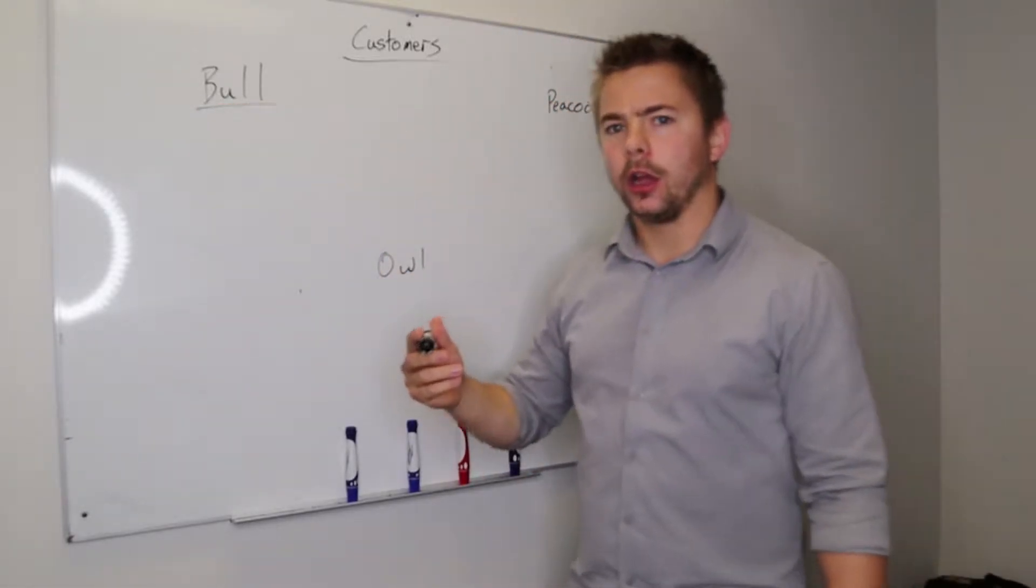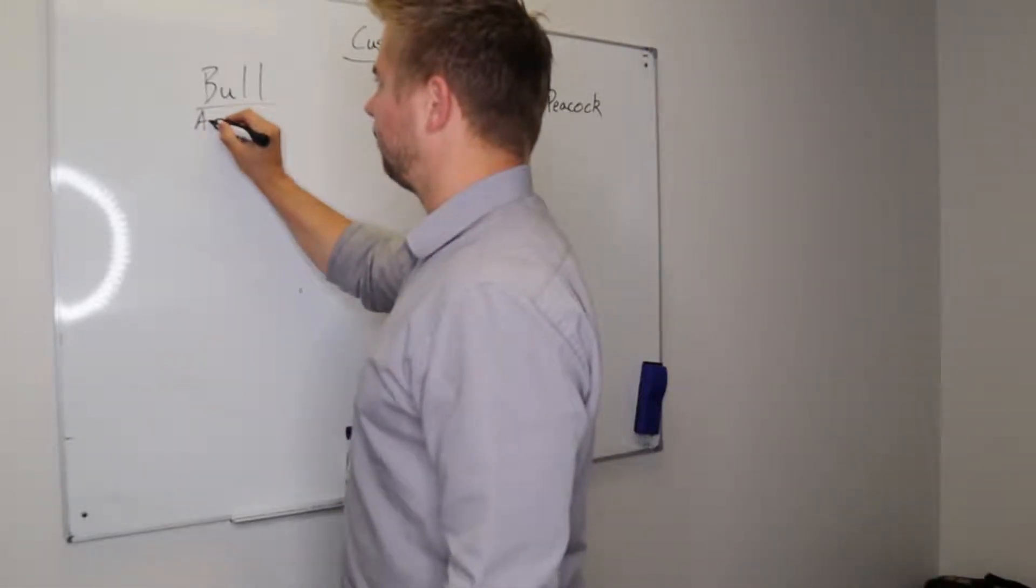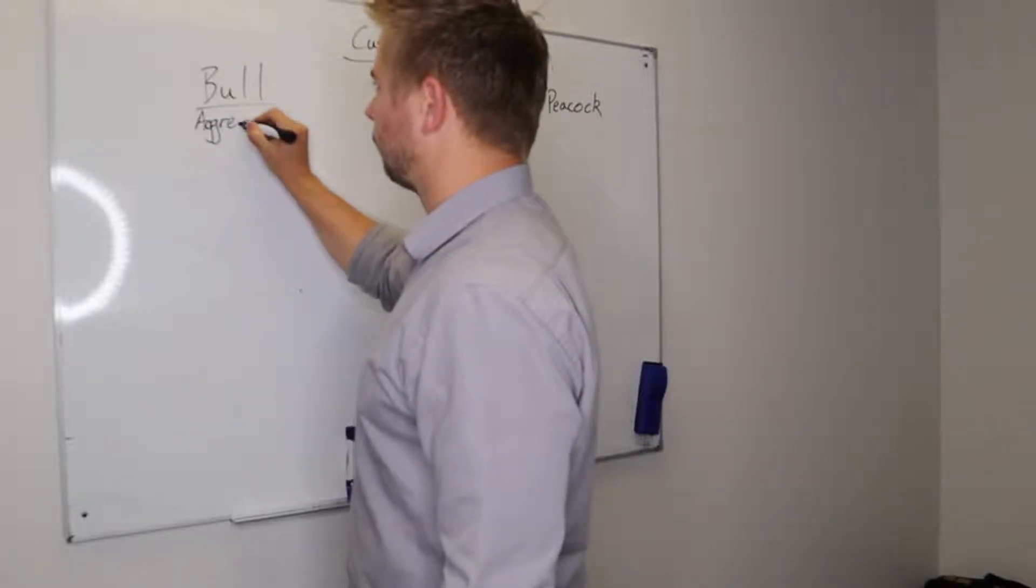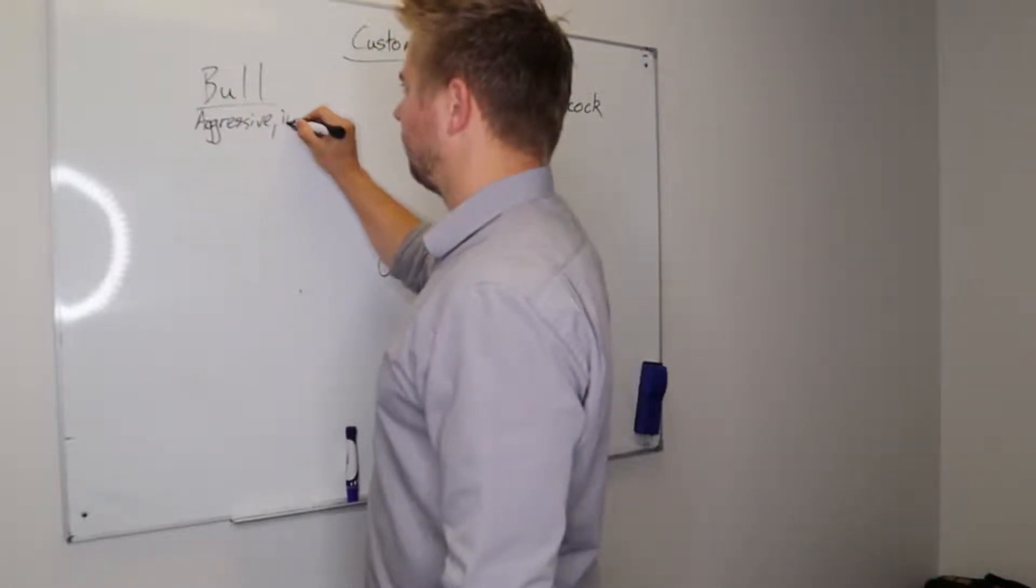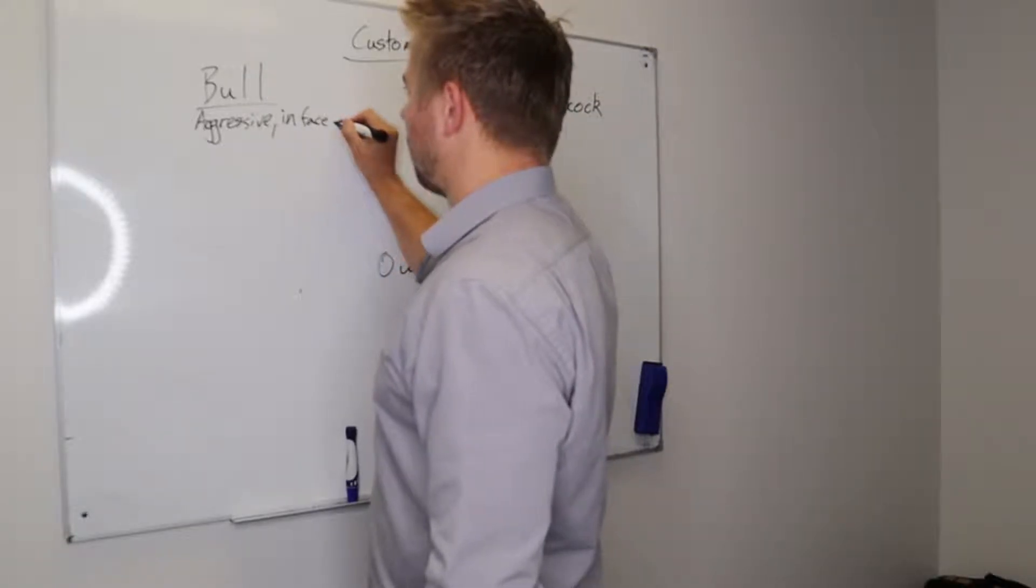Now characteristics of a bull obviously is that they're aggressive, in the face, and to the point.